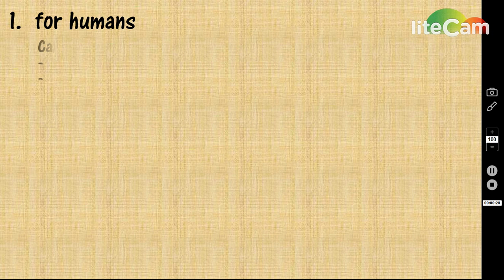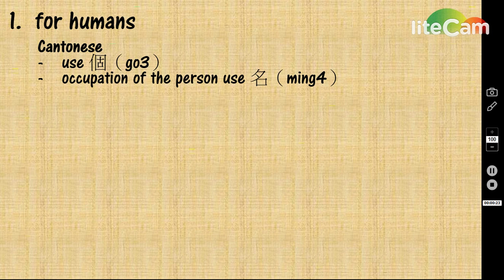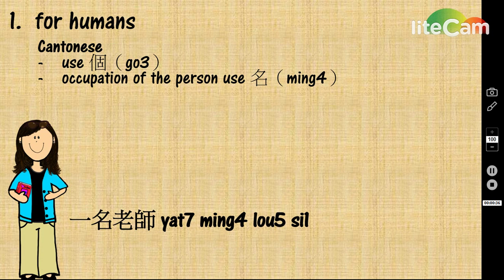For humans, we will use the word 個. And for the occupation of a person, we will use 名 as the quantifier. For example, 一名老師 means a teacher. And teacher is a kind of occupation, so we will use the word 名 to emphasize the occupation of this person.